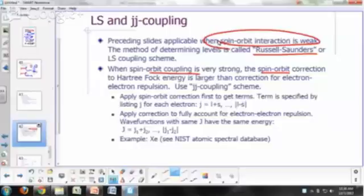So it's better to do the spin-orbit correction first before you apply the electron-electron repulsion correction. And so in these cases, you use a different scheme for coming up with the energy level. In this case, you apply the spin-orbit correction first to get the terms.